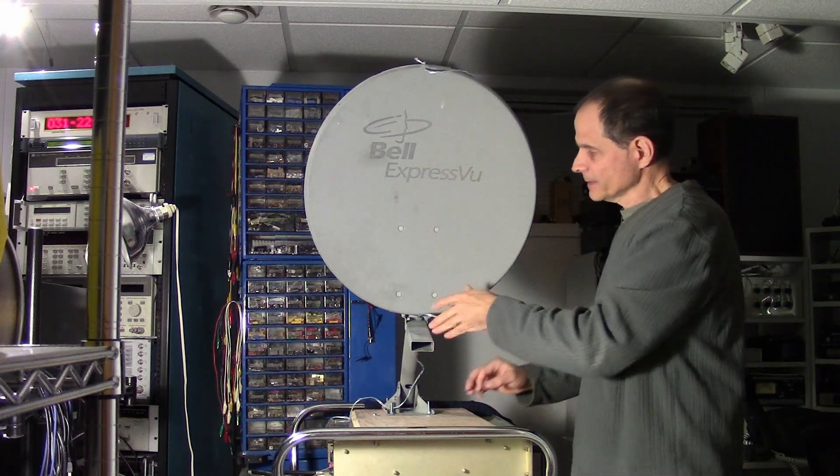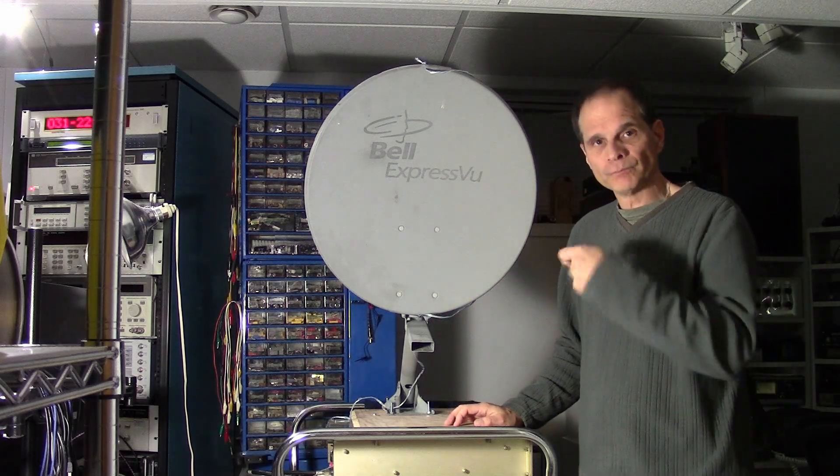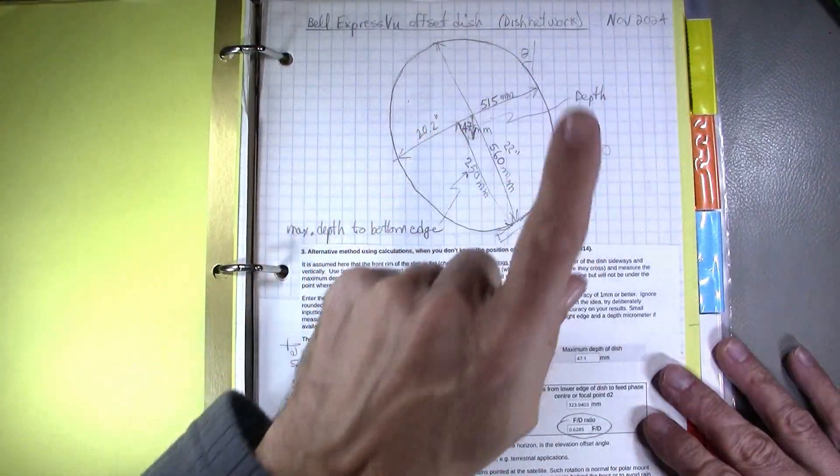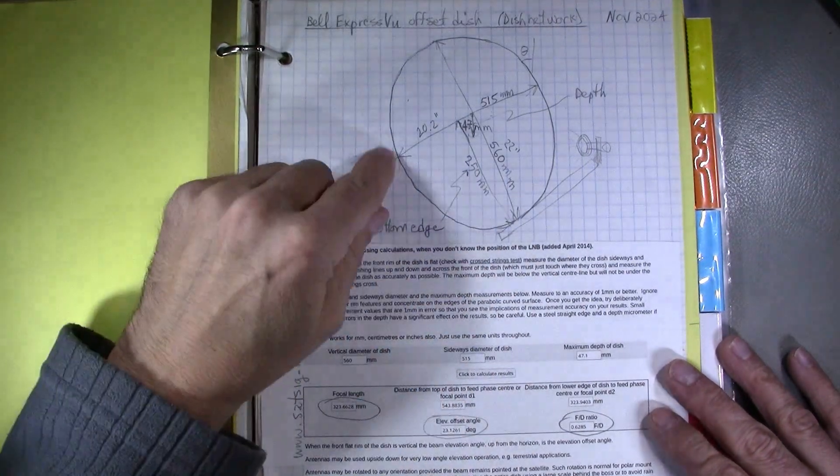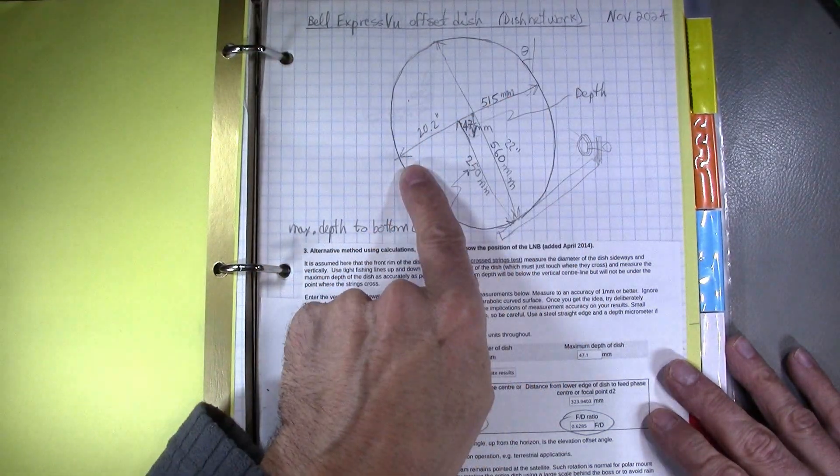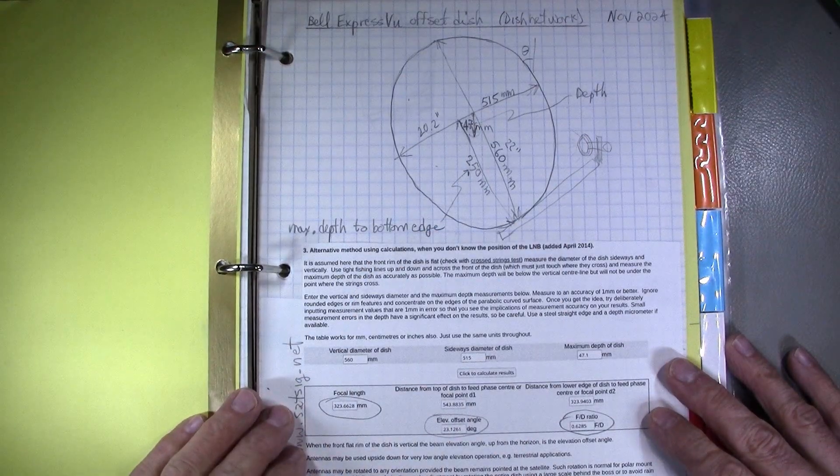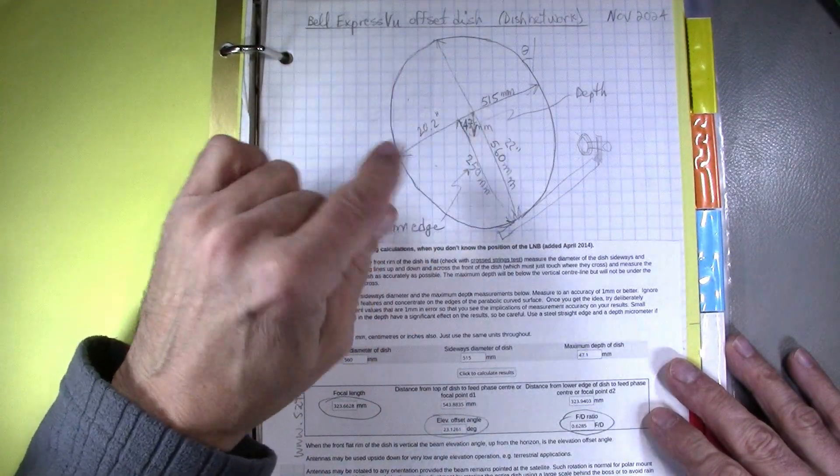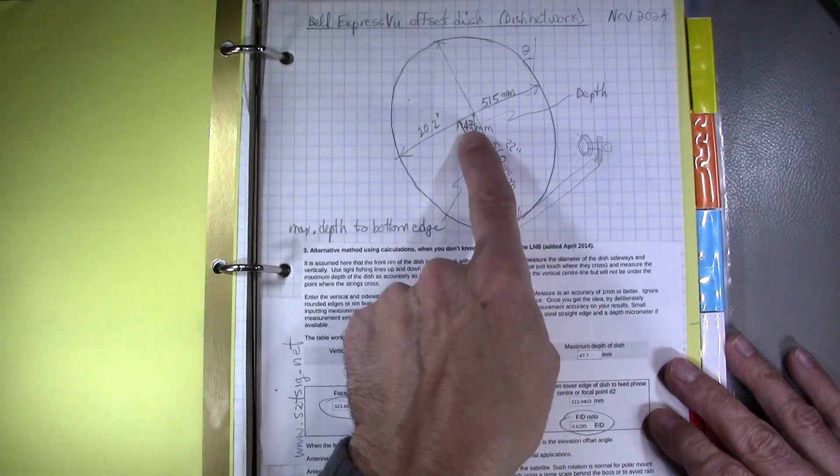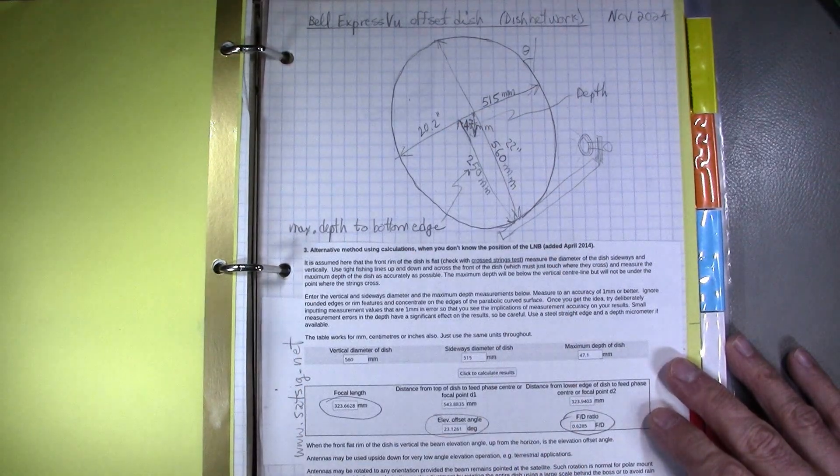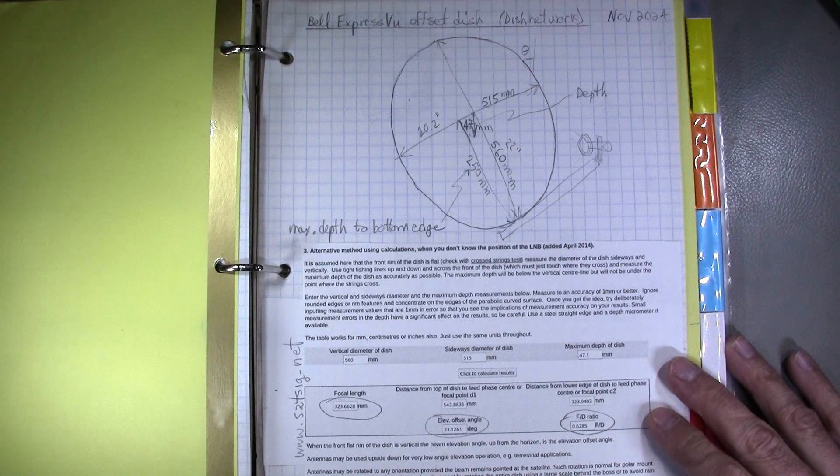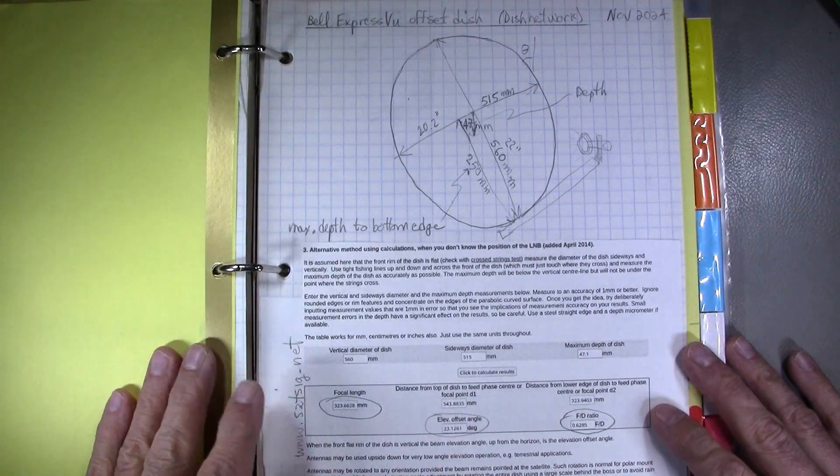Now for the characteristics of the dish, let's go see what I wrote down, the notes I took. The dimensions of that Bell Express View dish, it's actually a dish network dish I'm pretty sure. It's 22 inches or 56 centimeters by 20.2 inches or 51.5 centimeters. So we can say it's a 22 inch offset dish. It's 250 millimeters, so 25 centimeters from the bottom, that's where it's the deepest and it's 47 millimeters deep.